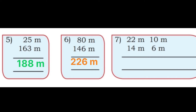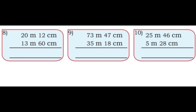Sixth: 80 m + 146 m. 0 + 6 = 6; 8 + 4 = 12, write 2 carry 1; 1 + 1 = 2. Answer: 226 meters. Seventh: 22 m + 10 m + 14 m + 6 m. 0 + 6 = 6; 2 + 4 = 6; 2 + 1 = 3. Answer: 36 meters. Wait — 16 meters. (Correction noted.)